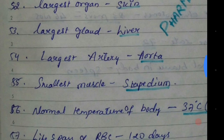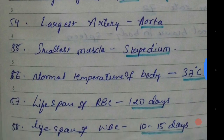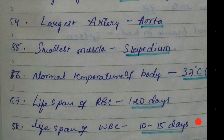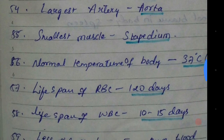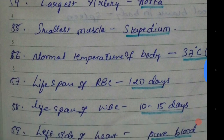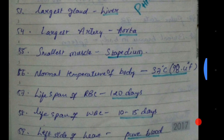Largest artery — aorta. Smallest muscle — stapedius. Normal temperature of the body — 37 degrees.